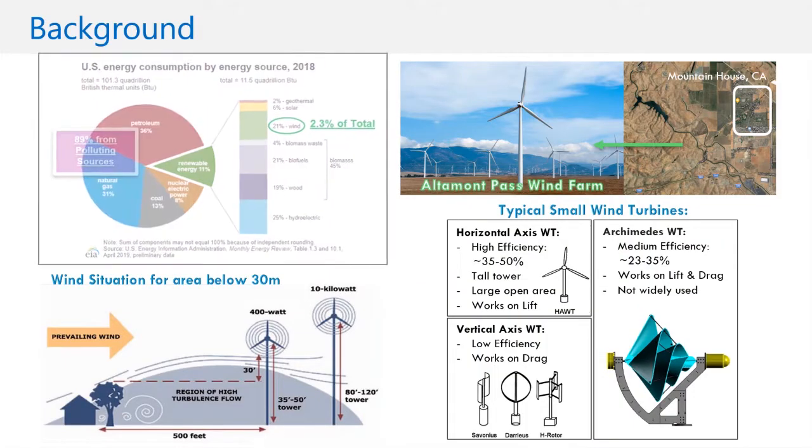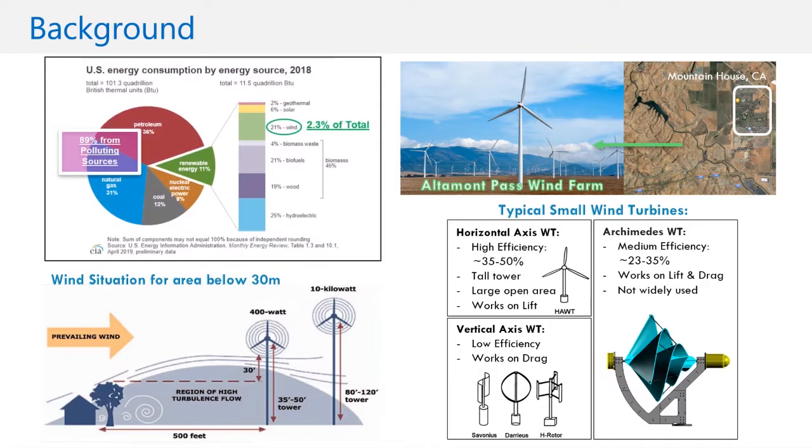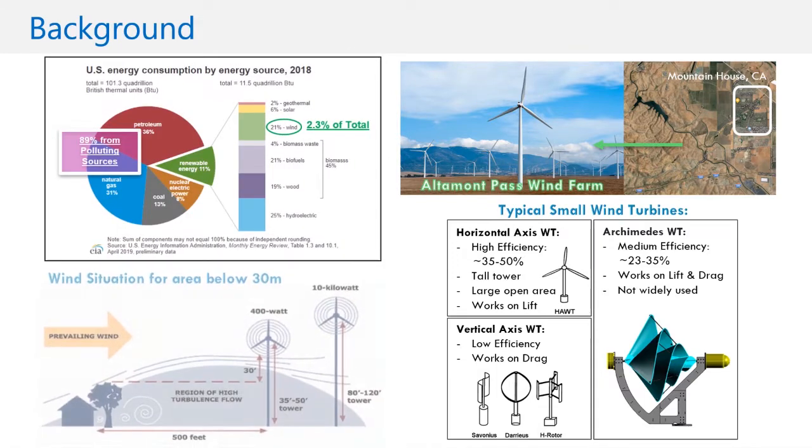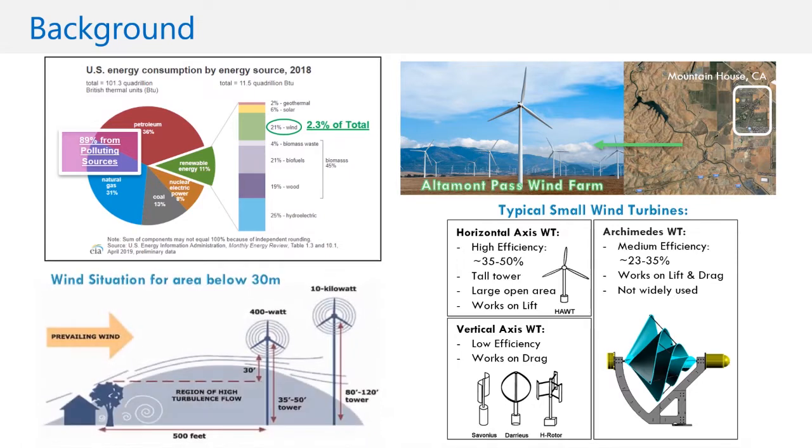Wind energy is cost-effective and non-polluting, so why isn't it widely harvested? Because in areas under 30 meters, there are regions of turbulence, where laminar flow transforms from a straight linear path into all sizes of eddying motions.